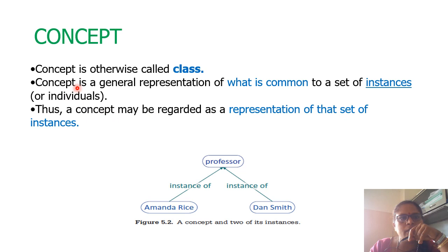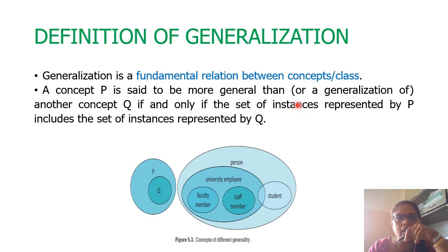Next is concept. What is a concept? It is simply a class — a general representation of what is common across a set of instances. These two persons form more than one, which is called a set. Both are individuals that become a set of instances belonging to professor. So the concept is a general representation of these individual things and can be regarded as a representation of the set of instances.